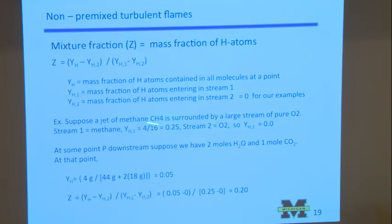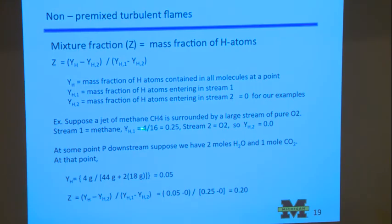which, if you have a jet, is usually the center jet is fuel, and so it has H atoms in it generally. So let's call this center jet stream 1. And then around that jet is an outer stream, which may be very large, and that's maybe air, and the mass fraction of H atoms in the outer air stream is zero. So, for simplicity, let's say that you have methane, CH4, and we're surrounding it with O2.